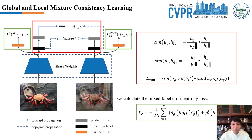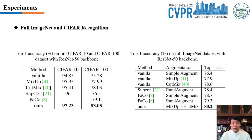For the supervised learning branch, after constructing the global and local augmented data pair, we calculate the mixed label cross entropy loss. We conduct our experiments on the full ImageNet and the CIFAR datasets. The results show that our approach can achieve the best performance compared with several baseline models. Moreover, our approach does not need to construct negative samples, which can significantly reduce memory usage during training.